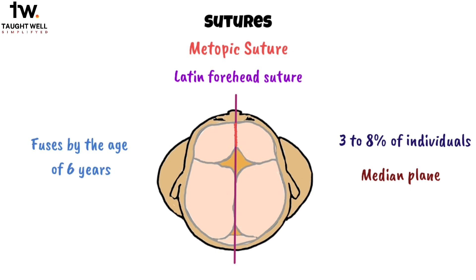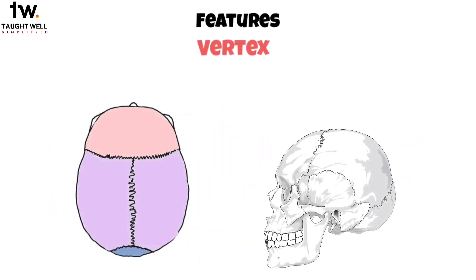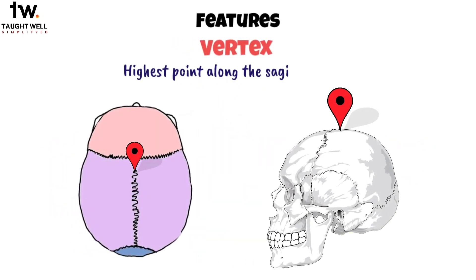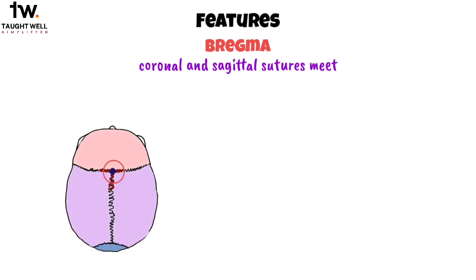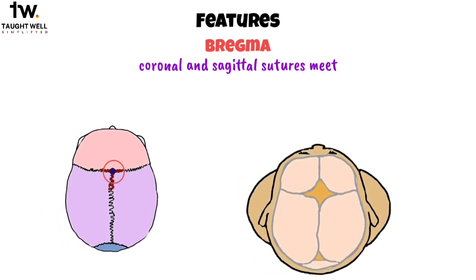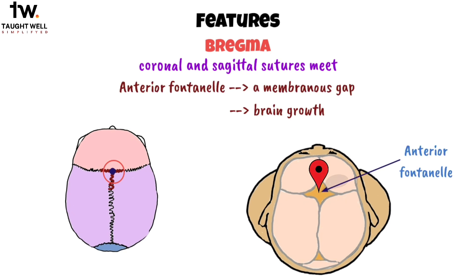Let's explore some other named features of the skull. The vertex is the highest point along the sagittal suture. The vault of the skull forms an arched roof, giving the skull its dome-like shape. Moving on to the bregma, this is where the coronal and sagittal sutures meet. In fetal skulls, it's also the location of the anterior fontanelle, a membranous gap that allows for brain growth. This fontanelle typically closes around 18 months of age.